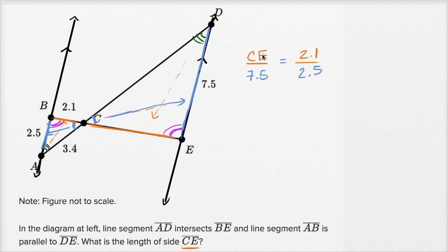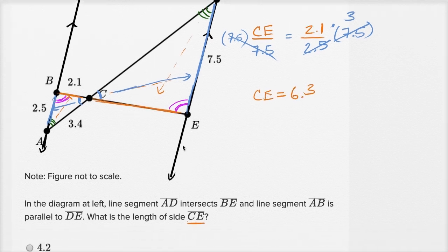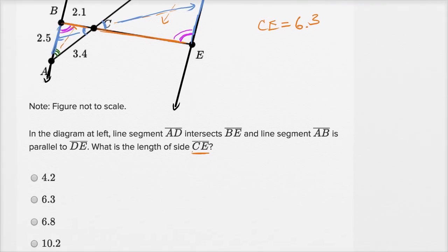So what would CE be equal to? Well, multiple ways to solve this, but one way, we could just multiply both sides by 7.5. Now what's 7.5 divided by 2.5? Well, 75 divided by 25 would be 3, so 7.5 divided by 2.5 is 3. So it's going to be 3. So length of segment CE is 2.1 times 3. So the length of segment CE is going to be 6.3. If we look down here, we see that that is indeed one of the choices.